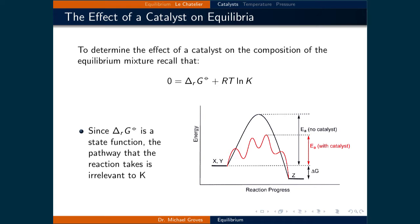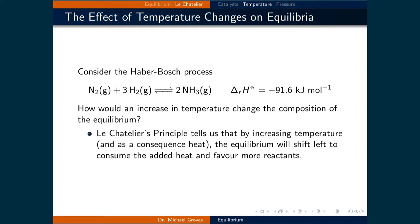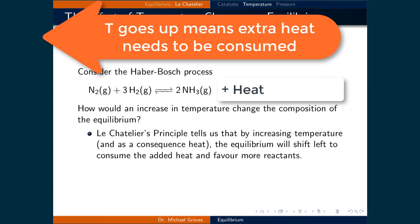What about changes in temperature? Returning to the Haber-Bosch process, which converts nitrogen and hydrogen gas to ammonia, we calculated that the heat of the reaction is negative 91.6 kilojoules per mole. How would an increase in temperature change the composition of the equilibrium? Le Chatelier's principle tells us that by increasing the temperature, and as a consequence heat, the equilibrium will shift left to consume the added heat and favor more reactants. This can be visualized by thinking that heat is a product in this reaction, and the increase in temperature adds heat to the system which must be consumed, therefore shifting the equilibrium towards the reactants.